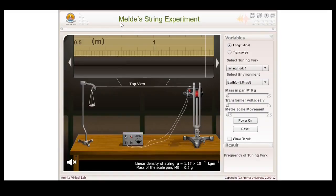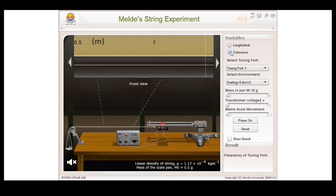Here we are going to see the determination of frequency of tuning fork with Melde's string experiment. The frequency of the tuning fork can be determined either in longitudinal mode or in transverse mode. Let me select transverse mode. In this section, I selected tuning fork 1 and the environment as earth here.